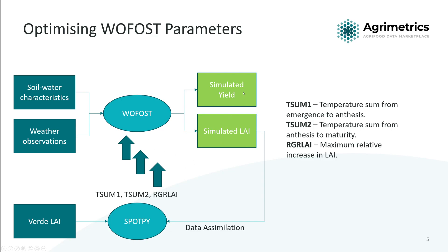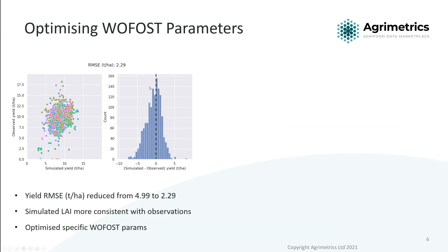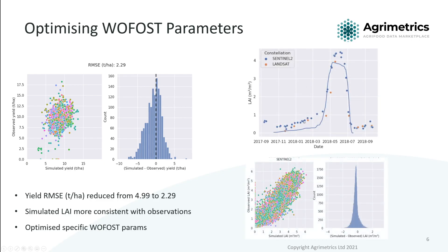At this point we can then take the results from the simulated yield. Looking at the results from the data assimilation model, we can first see that the delta — the simulated minus observed — the distribution is focused a lot more on the zero point, so we've removed a big chunk of that negative bias. If we look at the leaf area index, the simulated and observed values are a lot more in line with each other, and there's a high correlation between them from the scatter plot.